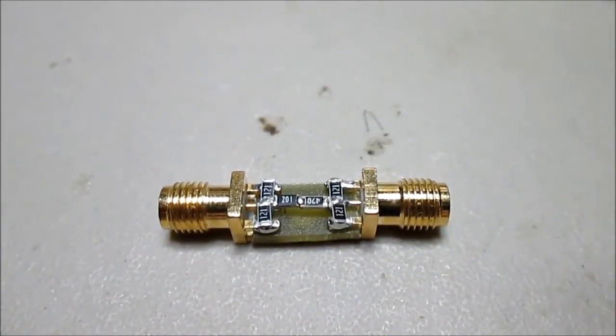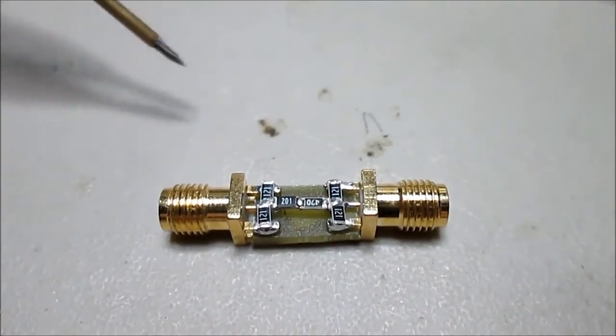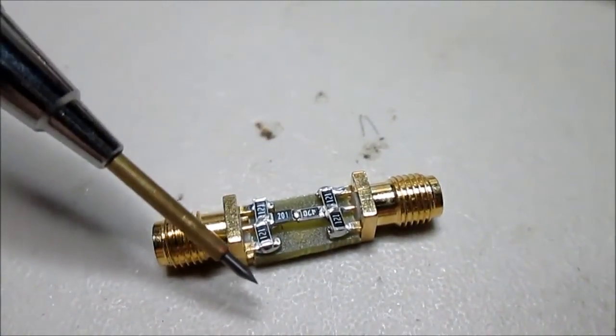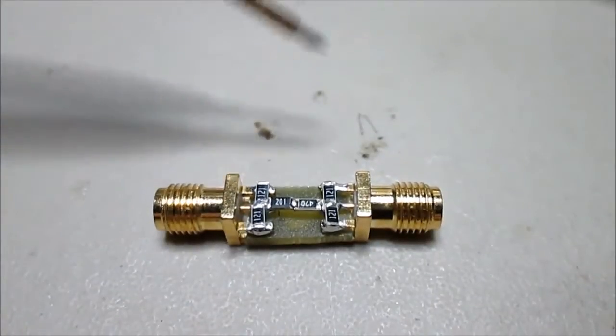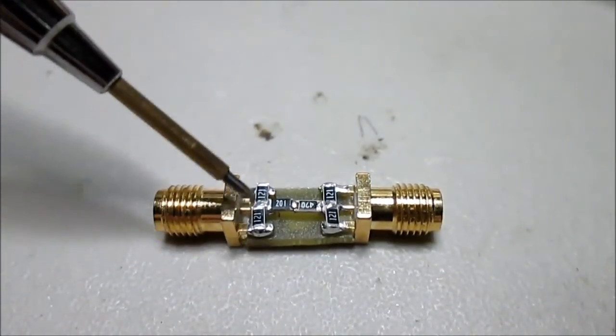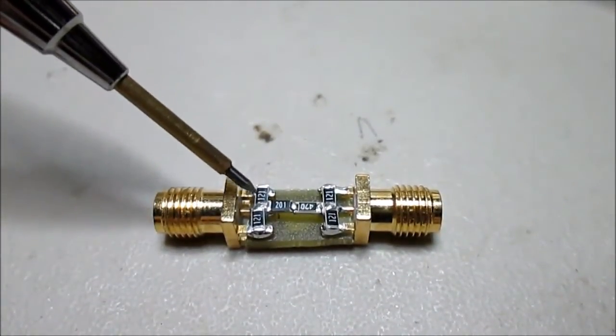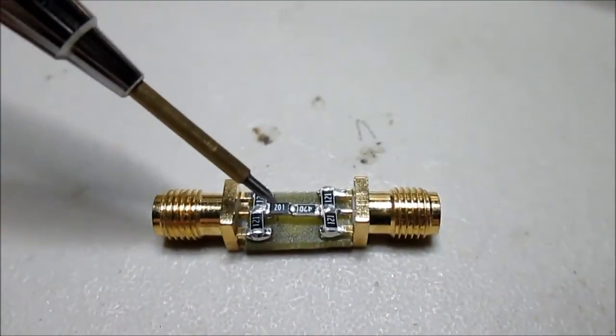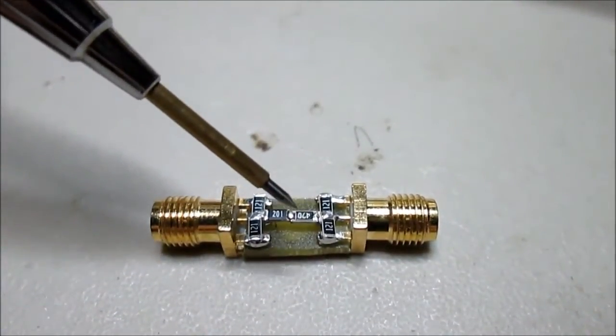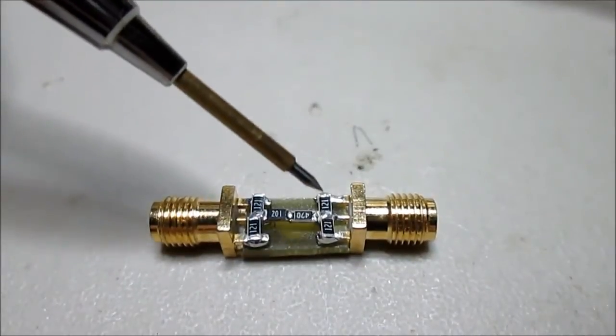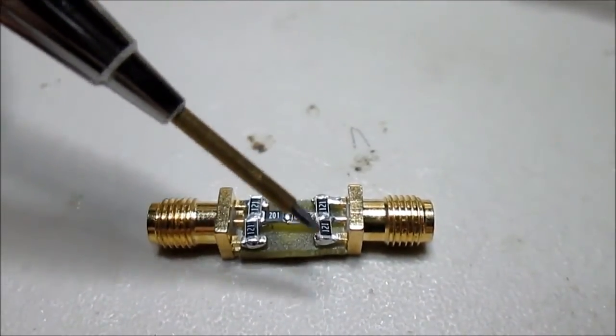Alright, so here's the circuit board that is completed pretty much. So this is what I was talking about. You've got the two resistors, one here and one here, from the center pin to the ground. And then I put the two in series because it's a pi-type attenuator. And then two on this connector from the center pin to the ground and the center pin to the ground.